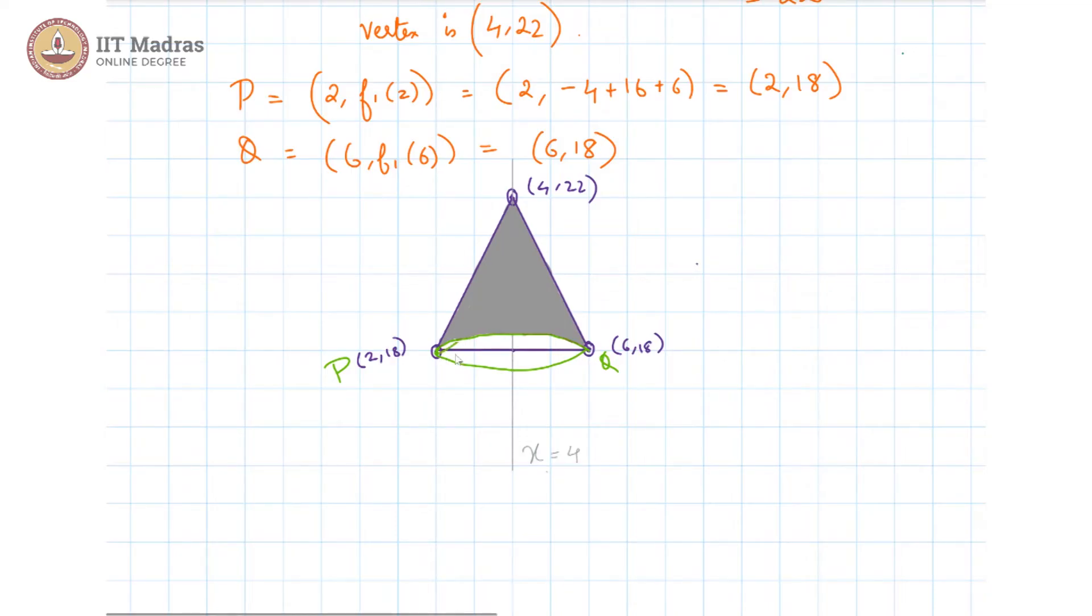And the base circle is this flat surface below, this is the base circle. And we are interested in the curved region whose surface area is given to be pi r l. So what is r?